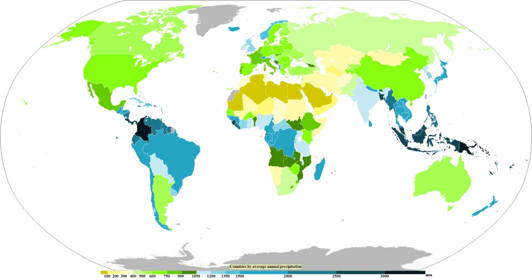Mechanisms of producing precipitation include convective, stratiform, and orographic rainfall. Convective processes involve strong vertical motions that can cause the overturning of the atmosphere within an hour and cause heavy precipitation, while stratiform processes involve weaker upward motions and less intense precipitation. Precipitation can be divided into three categories based on whether it falls as liquid water, liquid water that freezes on contact with the surface, or ice.